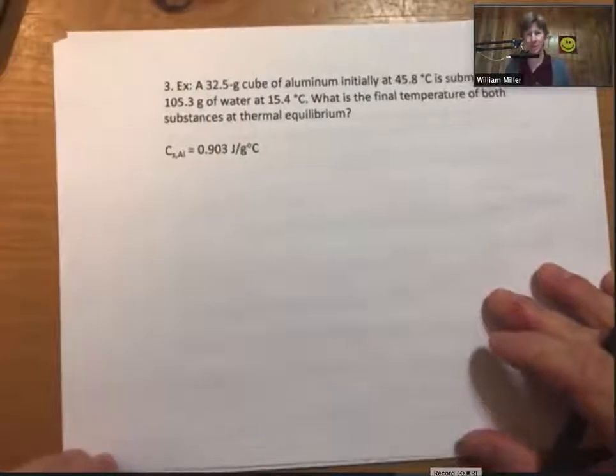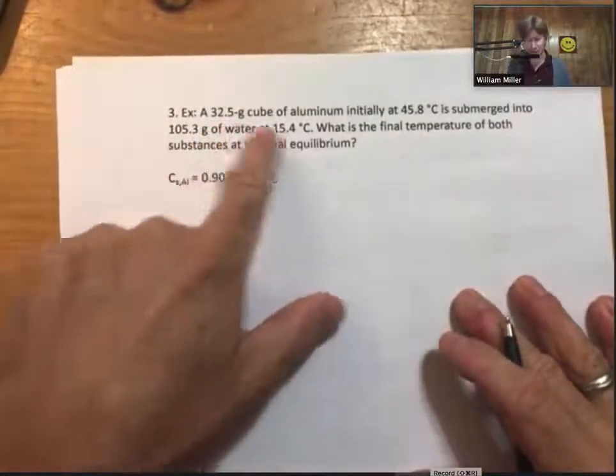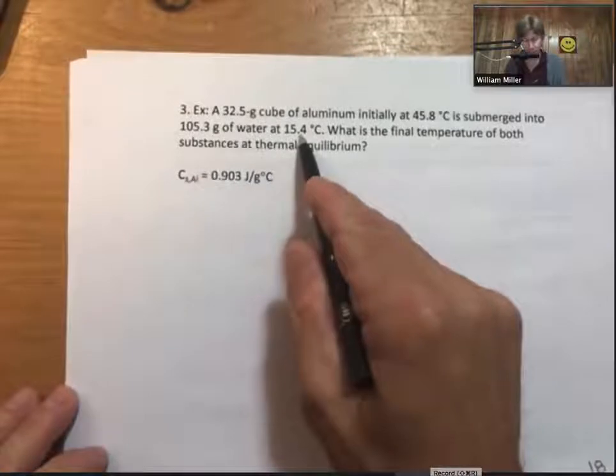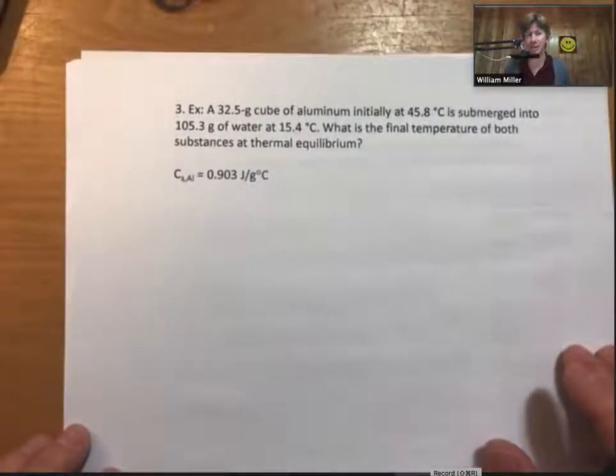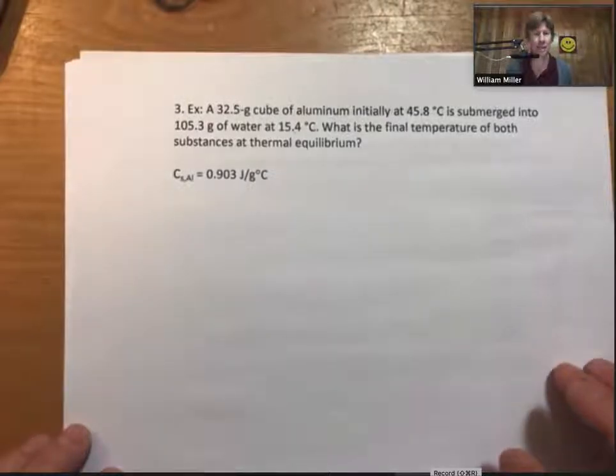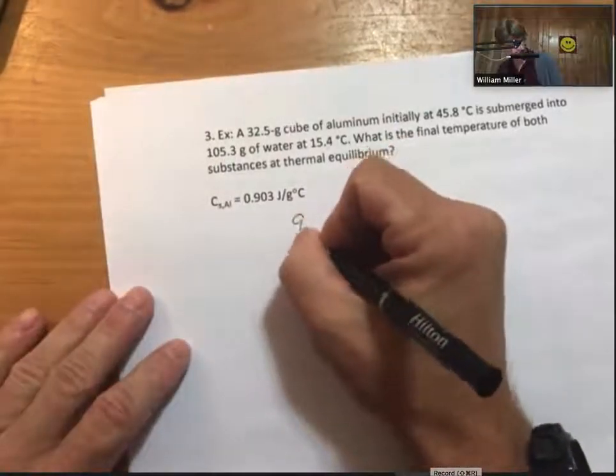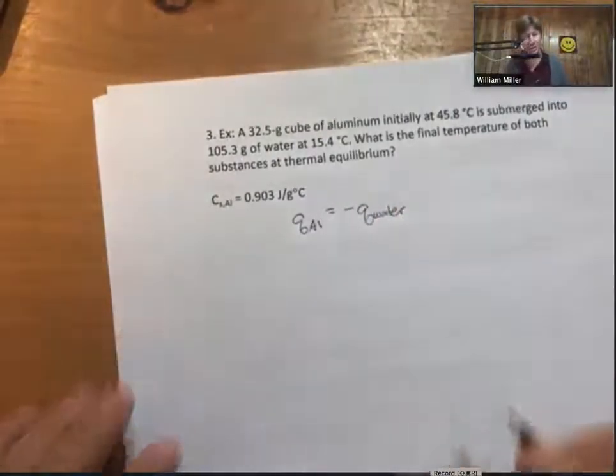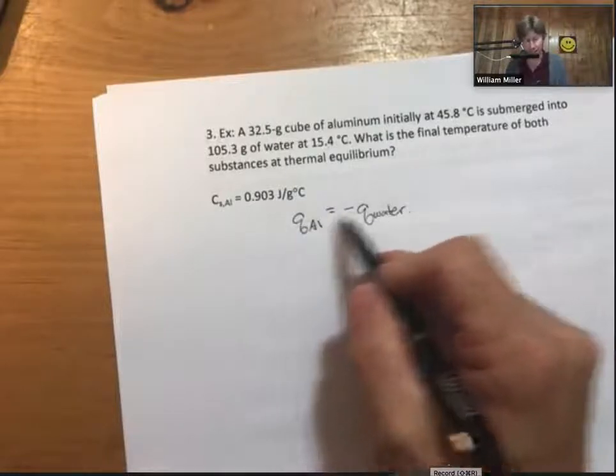We'll do one more example in this video. That's two with a reaction, let's do one with a material. The material one goes like this: it is a piece of aluminum with an initial temperature, submerged into some water at a specific temperature. What is the final temperature of both substances at thermal equilibrium? Thermal equilibrium means temperature equilibrium - everything has stopped changing. Another way of saying the final temperatures are equal to each other. This is a material, and that material will give up energy since it's the warmer material to water. The minus sign shows the difference in direction.